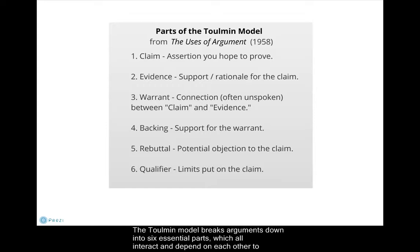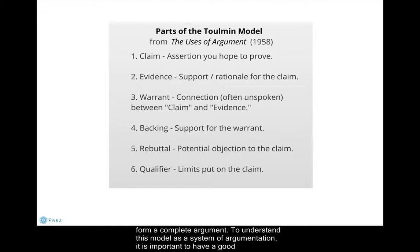The Tullman Model breaks arguments down into six essential parts, which all interact and depend on each other to form a complete argument. To understand this model as a system of argumentation, it is important to have a good understanding of each component part on its own.